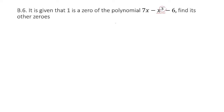That means it is bound to have 3 zeros. Keep that in mind. They have already given us 1 of the zeros. These are zeros — when you substitute the value of x, you will get the equation as 0.